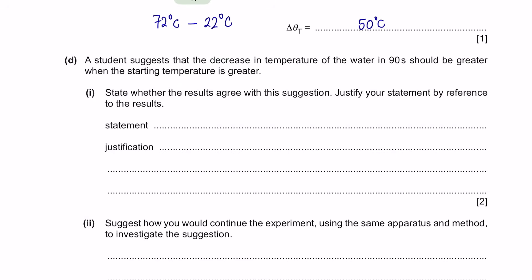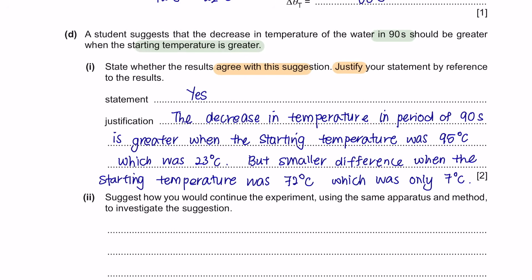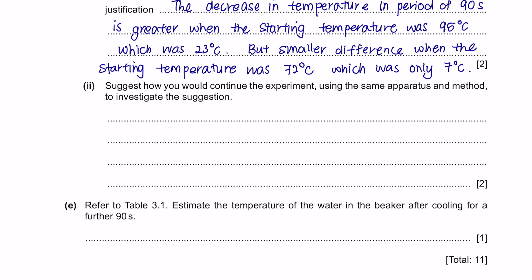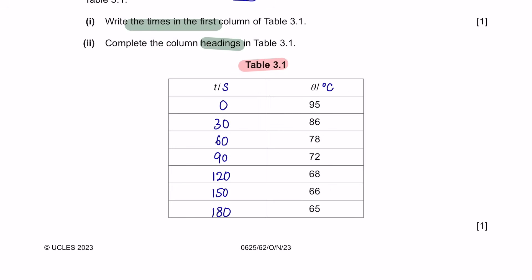Question D. A student suggests that the decrease in temperature over 90 seconds should be greater when the starting temperature is greater. Part 1: state whether the results agree. When the starting temperature was higher, the decrease over 90 seconds was 23°C; when starting lower, it was only 7°C — so the statement is correct. When you have a higher starting temperature, the temperature decreases more drastically. Part 3: to continue the experiment, we can run it longer than 180 seconds, or until we reach room temperature.